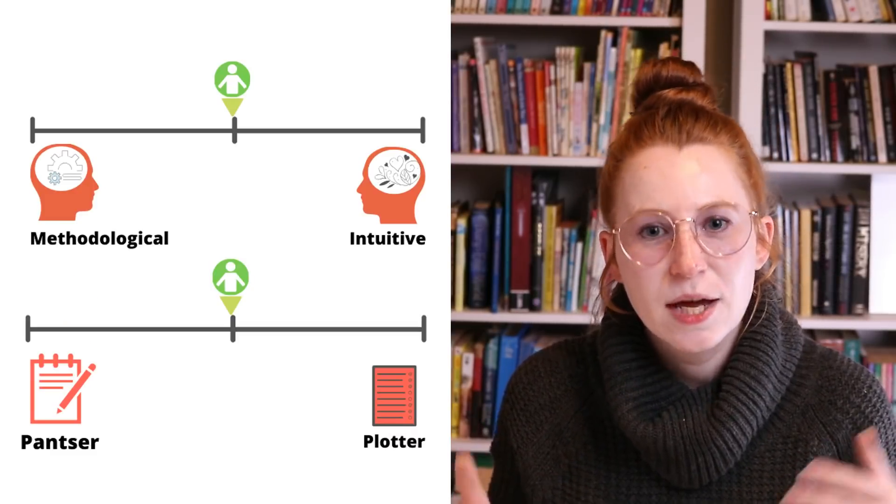From those two continuums we get the four types: methodological plotter, which is what we're talking about today, methodological pantser, intuitive pantser, and intuitive plotter. Because these types are built on continuums, you might sit between two types or even between all four. So you might need to take a mix and match approach. Just keep in mind that these videos are not prescriptive — this is not what you should do or the only possible way to make this type work for you. These are just things I've found tend to work for this type.